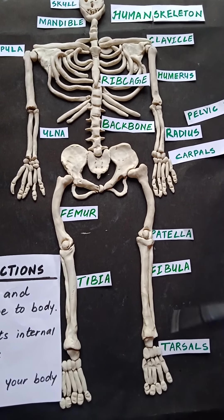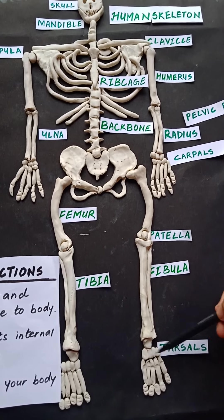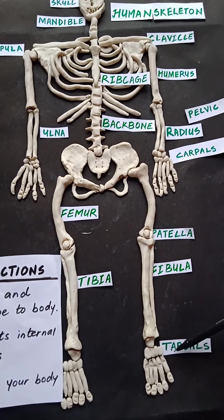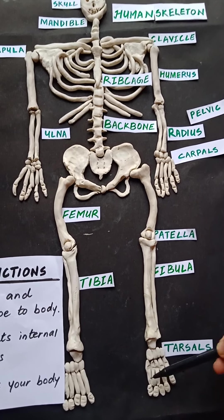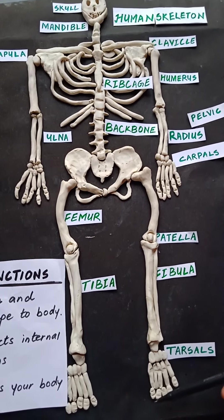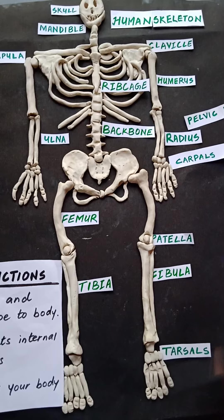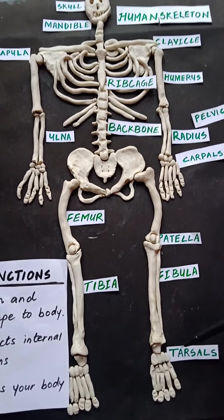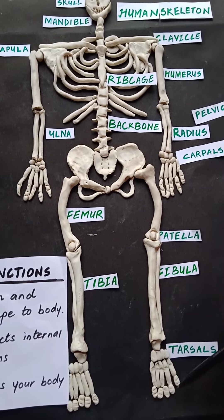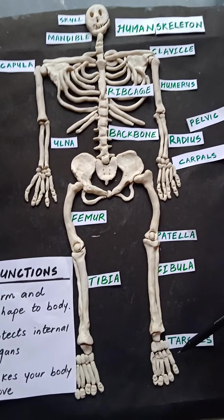Moving on to the bones in the feet: these are your tarsals — similar to carpals in the hands, but in the feet they are tarsals. T for toes, T for tarsals — that's how you remember. Here these are metatarsals, just like metacarpals in the hand. And the toe bones are the same — these are phalanges, just as the finger bones were phalanges.